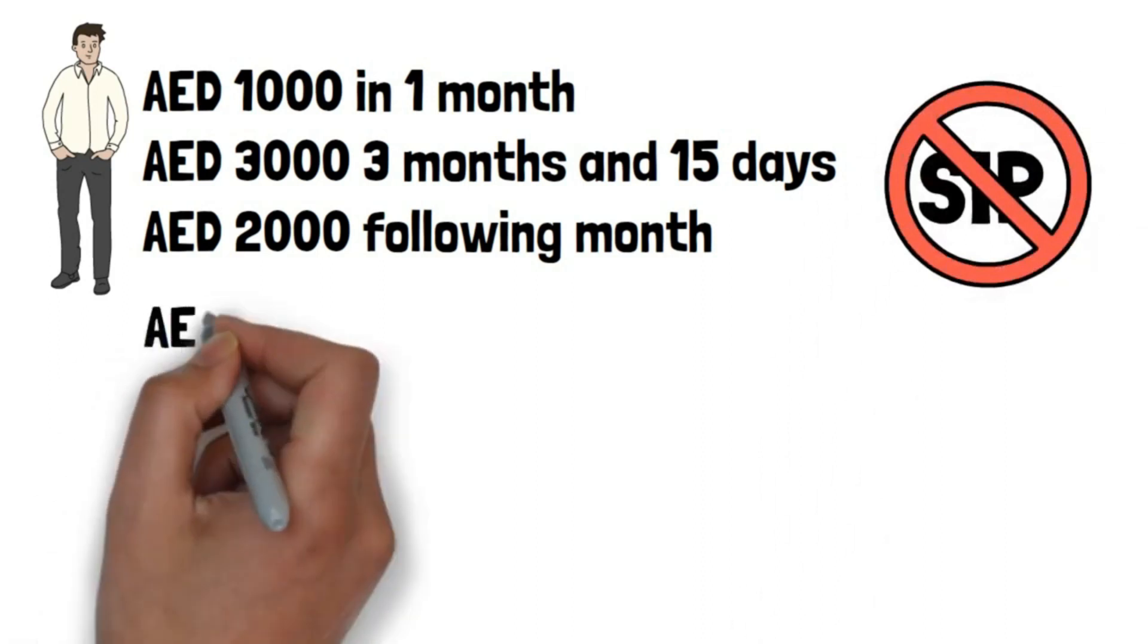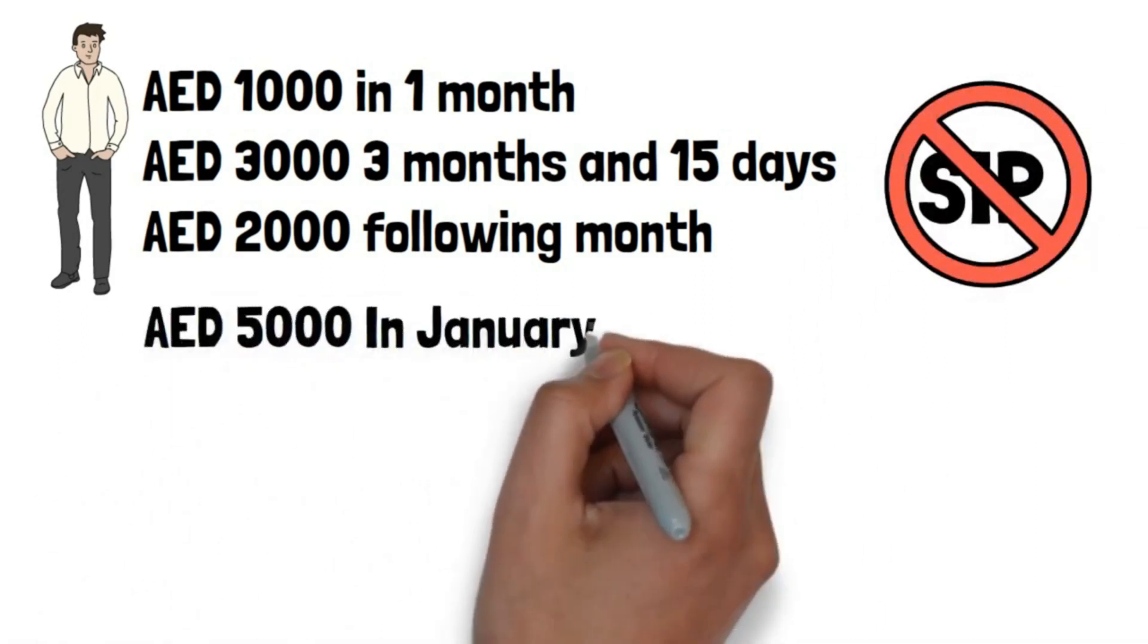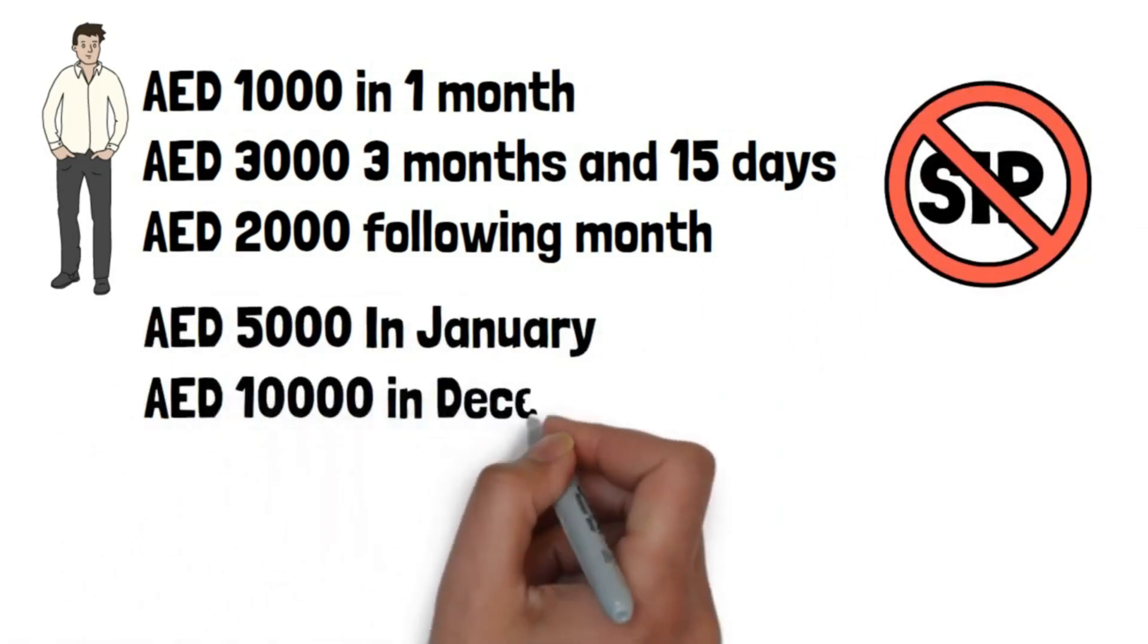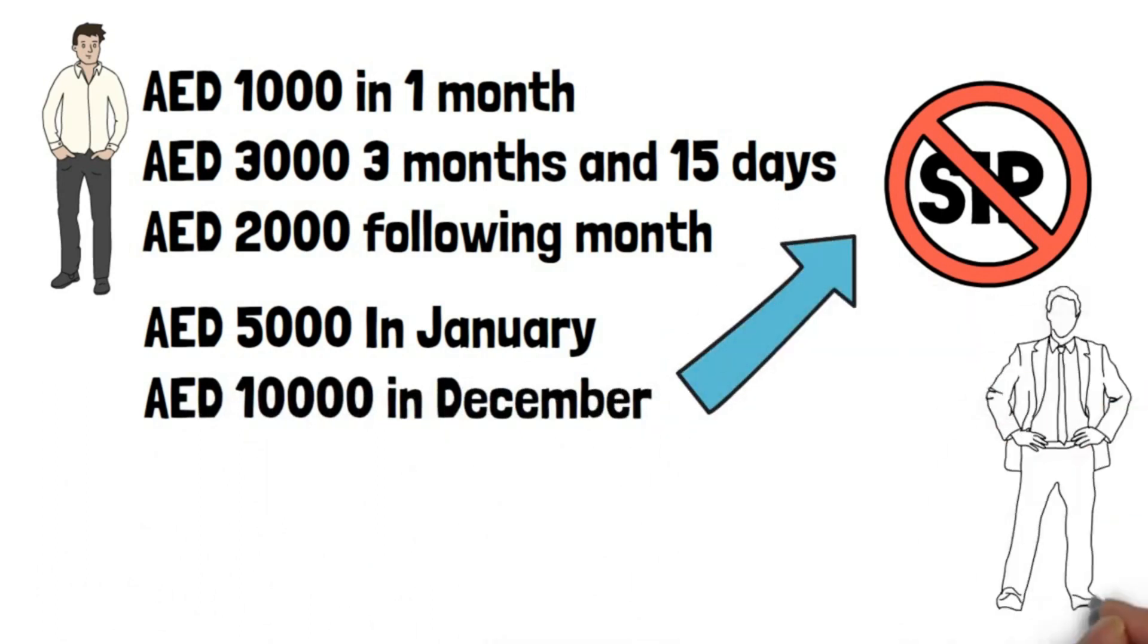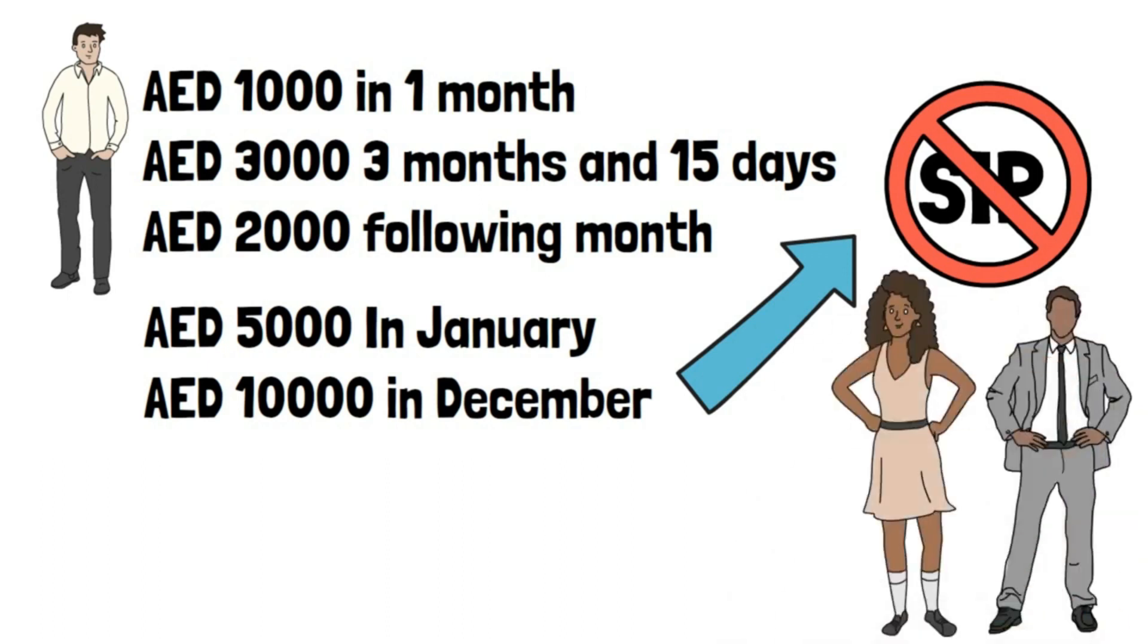Assume Mrs. James invests AED 5000 in January and AED 10,000 in December. Her actions do not qualify as a SIP. Only Mr. Jesse and Mrs. Harris are using a SIP in the cases above.